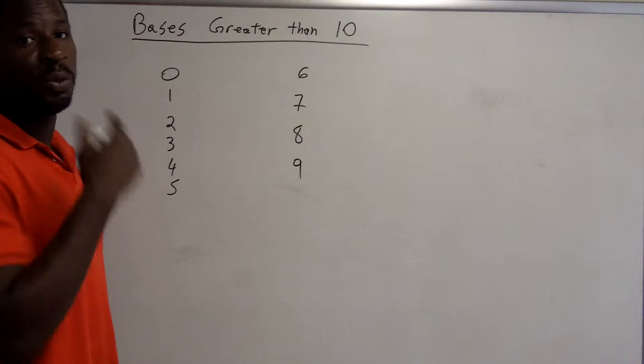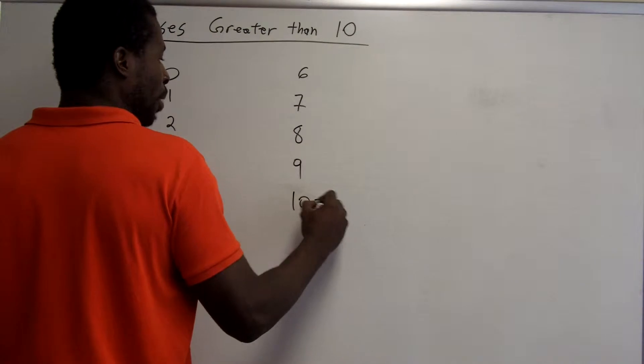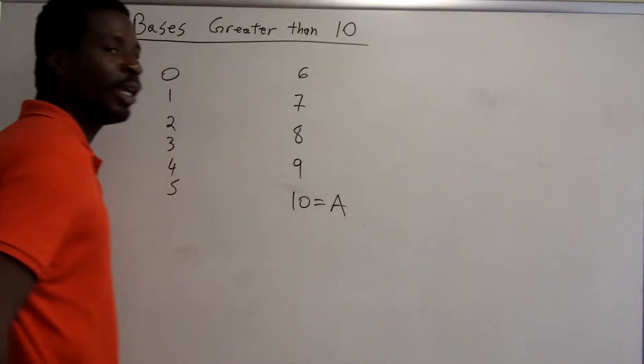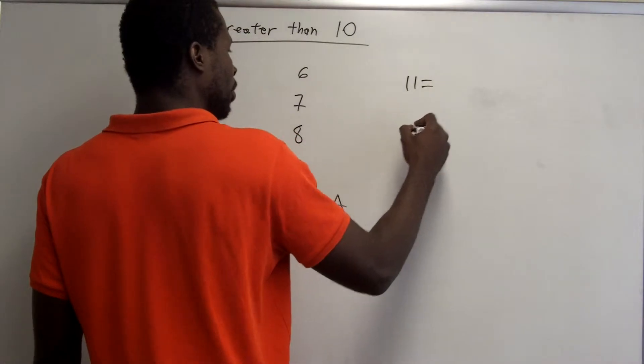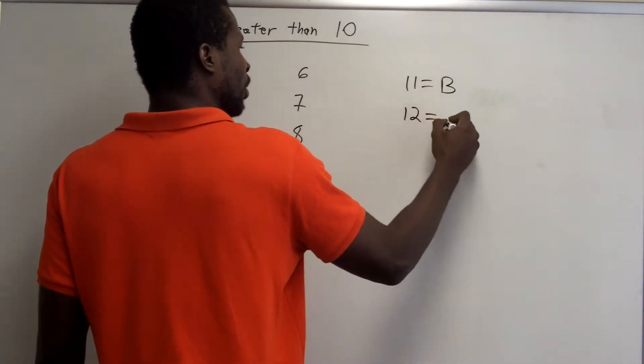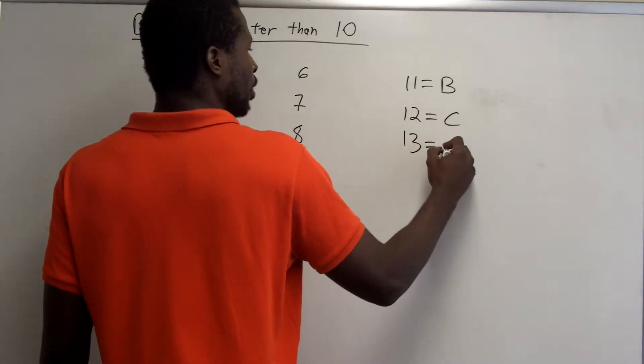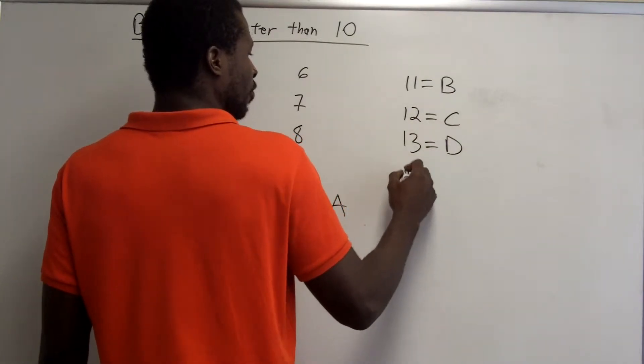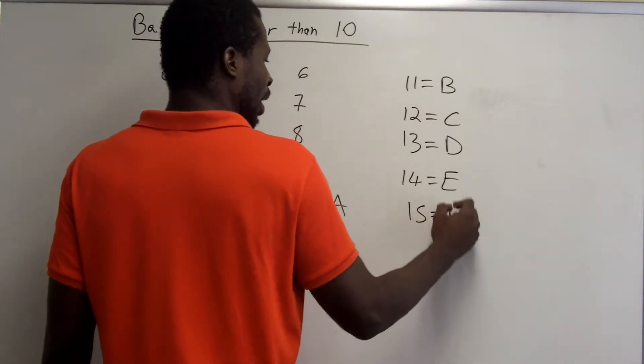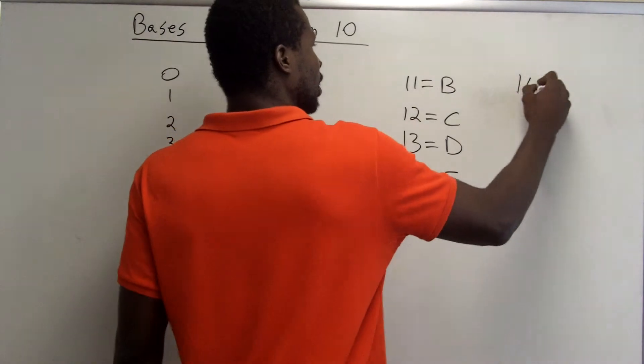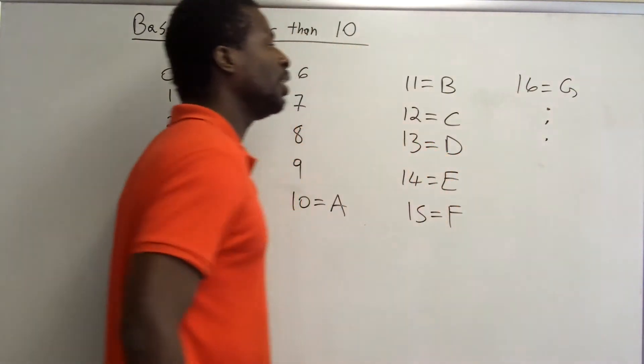Well, in this book what we're going to do is we're going to use the alphabet. So we're going to start off the number 10, we're going to represent with A, the letter A. The number 11 we're going to represent with B. 12 is going to be C, 13 is going to be D, 14 is going to be E, 15 is going to be F, 16 is going to be G, and so forth. So you can continue on in this fashion.